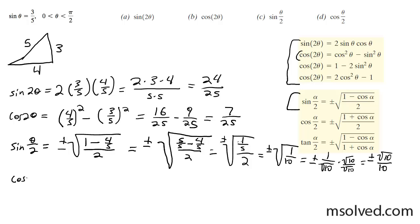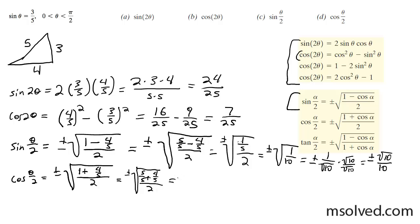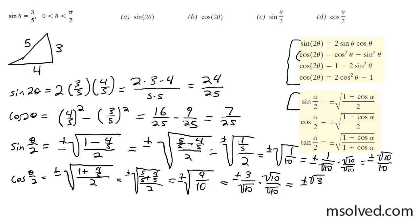For the cosine half angle, cosine of theta divided by 2 is plus or minus the square root of 1 plus the cosine of theta, which is 4 over 5, divided by 2. I won't go through every step, but working through it with 4 over 5 and 5 divided by 2, we end up with plus or minus the square root of 9 over 10. That gives us plus or minus 3 over the square root of 10. Multiplying through to clear the radical, we get plus or minus 3 square root of 10 over 10.